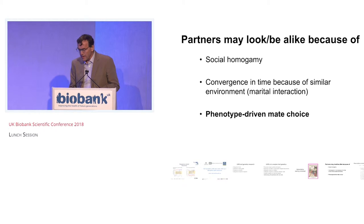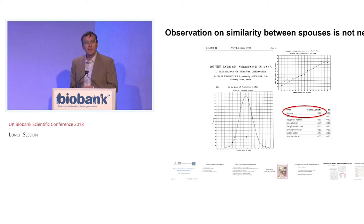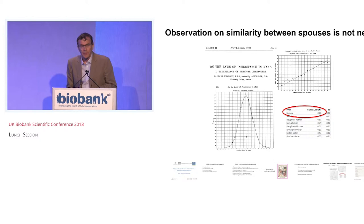There's actually nothing new in observing that spouses are similar to each other. This is a paper from 1903 from Pearson and Lee, who were interested in quantifying the correlation between first-degree relatives for human height, with data going back to the late 1800s. They also quantified the spousal correlation for human height: 0.28. And in fact, this hasn't changed that much — this is a similar value we have today.